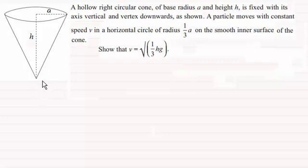And a particle moves with constant speed v in a horizontal circle of radius one third a on the smooth inner surface of the cone. And we've got to show that v equals the root of one third hg.